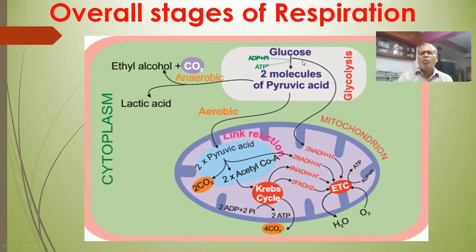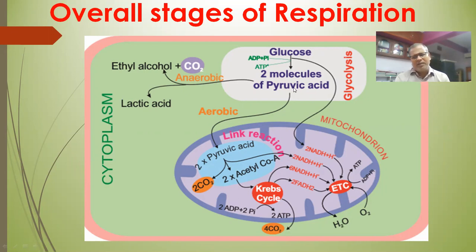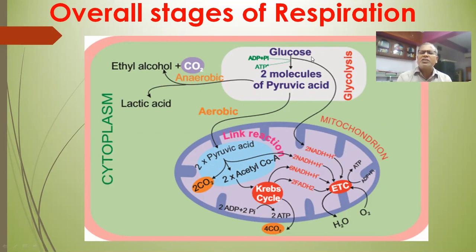In glycolysis, glucose is a 6-carbon molecule and pyruvic acid is a 3-carbon molecule. 'Glyco' means sweet, 'lysis' means splitting — so glycolysis means sweet splitting. It is the conversion of 6-carbon glucose into two 3-carbon pyruvic acid molecules.